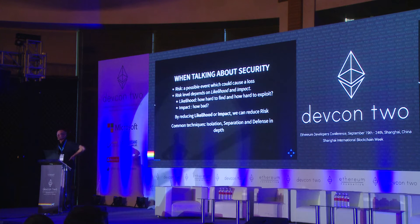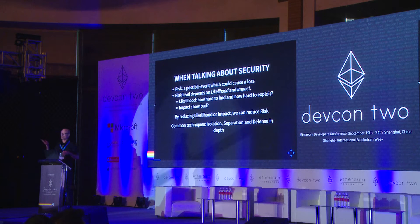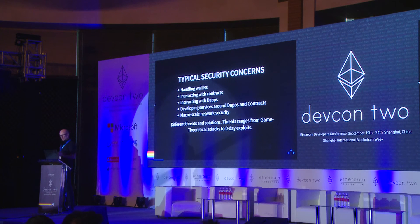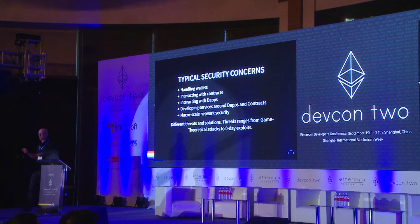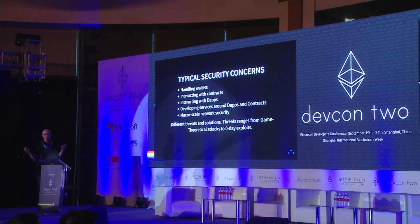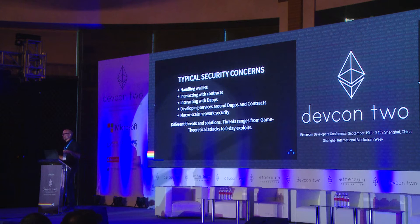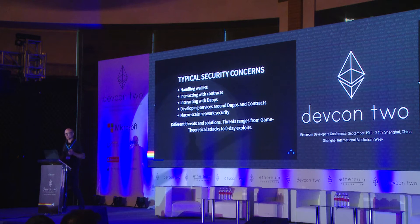Common ways to do that is to separate things, isolate them, and apply several layers of defense. Some typical security concerns in the overall Ethereum ecosystem include end-user security when you handle wallets and interact with contracts and dApps, how developers can build secure contracts and dApps, and on a macro scale, the network security overall. These are all different security concerns.